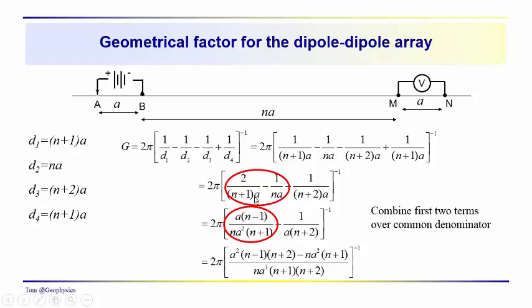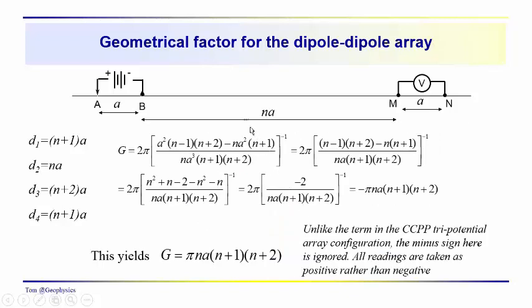We have n a squared times n plus 1, and then when we combine terms, we get a numerator of a times n minus 1, and then we continue to combine terms under the same common denominator. Notice that in the denominator here, we have n times a cubed times n plus 1 times n plus 2.